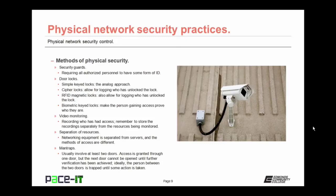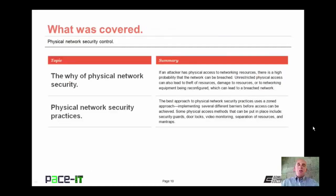You may also implement a separation of resources — networking equipment is kept separate from servers, with different methods of access for the two. And finally, in highly secure environments, a man trap may be implemented. A man trap usually involves at least two doors — access is granted through one door, but the next door cannot be opened until further verification has been achieved, and the person between the doors cannot go back out. That concludes this session on physical network security control. On behalf of PACE IT, thank you for watching this session, and I hope to do another one soon.